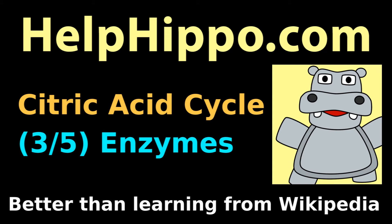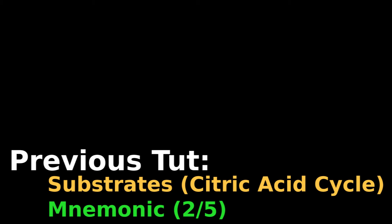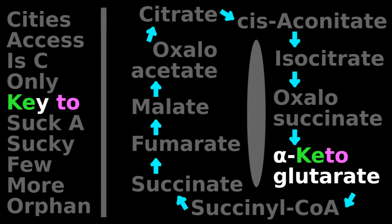Help Hippo. Better than learning from Wikipedia. Our previous tutorial provided a mnemonic to learn the substrates of the citric acid cycle. City access is the only key to suck a sucky few more orphaned cities.